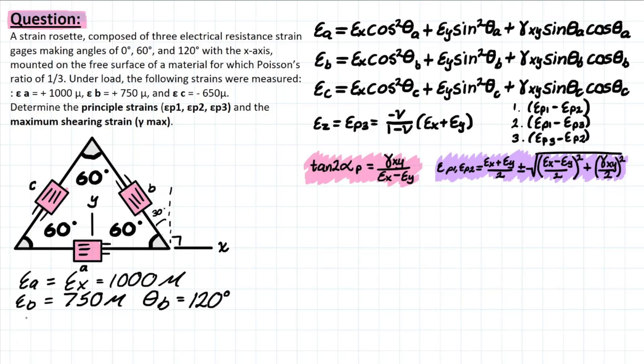Now let's look at theta_c, very similar thing. First, we write down that epsilon_c is a given value of negative 650. And then theta_c, a little bit different.